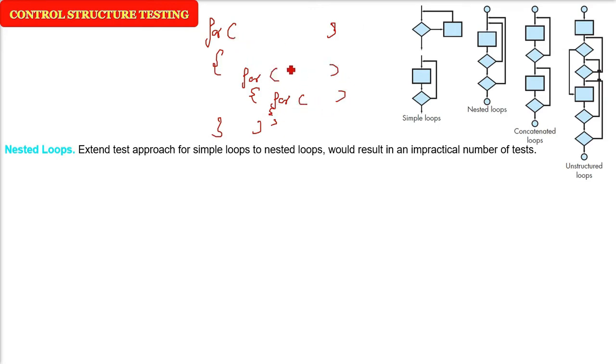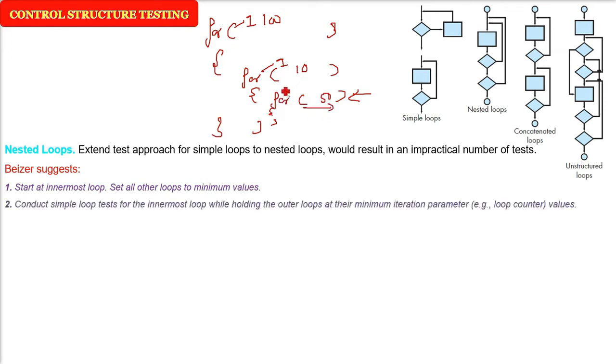Now, if you take the permutation combination, for example, the first one is running for 100 times, second is 10, third is 50 inside, then that will be an impractical number to test. Now, Bezier suggested that what you can do is, you start with the innermost loop. Give only minimum value to the outermost loop. For example, the upper two loops, outward two loops should run only for one time. And the inner should run for, say, 50 times.